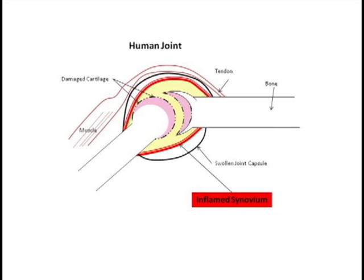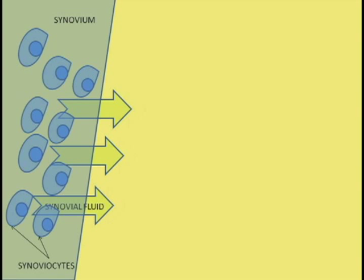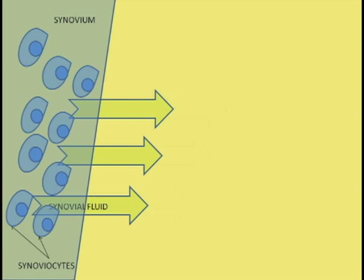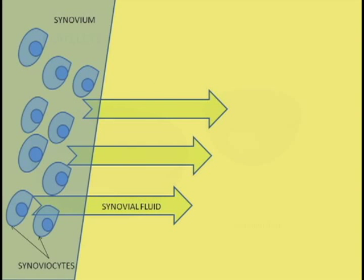Arthritis is characterized by the inflammation of joints and is often accompanied by pain and stiffness in the area. It all takes place in the synovial fluid, which is the lubricating substance that helps our joints rotate smoothly. Cells located in the synovium, the tissue that surrounds the joint, produce this fluid. These cells are known as synoviocytes.